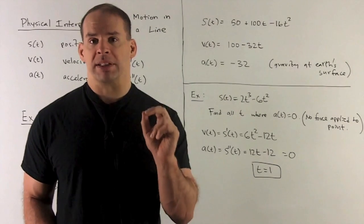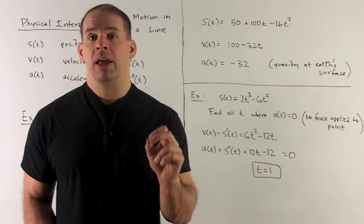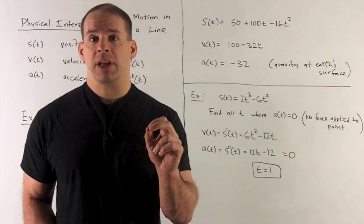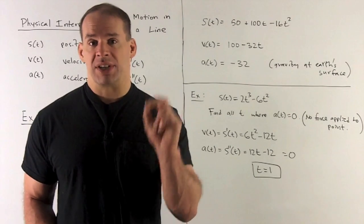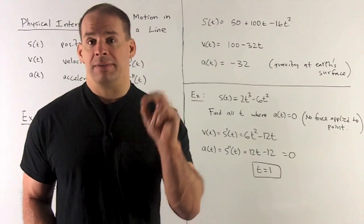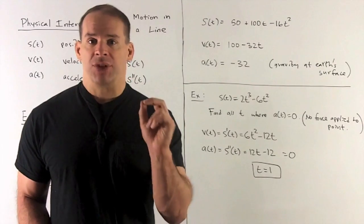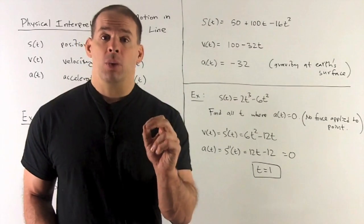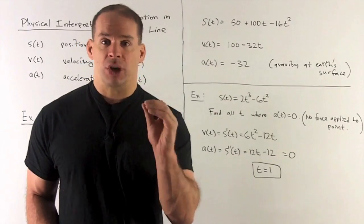I take the derivative with respect to t. We get 100 minus 32t. Take another derivative. It gives me the acceleration. We get minus 32. And that has units, feet per second squared. That's going to be gravity, which is a constant at the surface of the Earth.